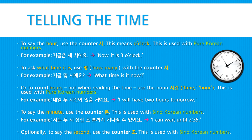To say the minute, use the counter 분, which is used with Sino-Korean numbers. For example: 저는 두 시 삼십 오 분까지 기다릴 수 있어요 — I can wait until 2:35. Optionally, to say the second, use the counter 조, also used with Sino-Korean numbers.